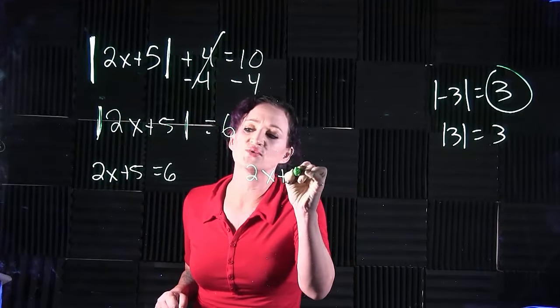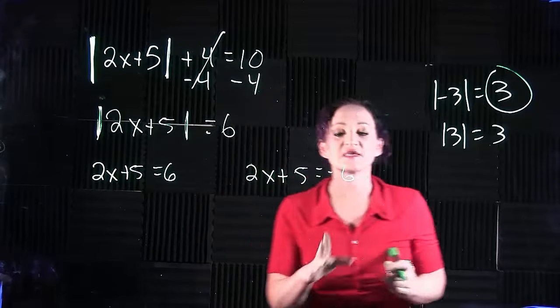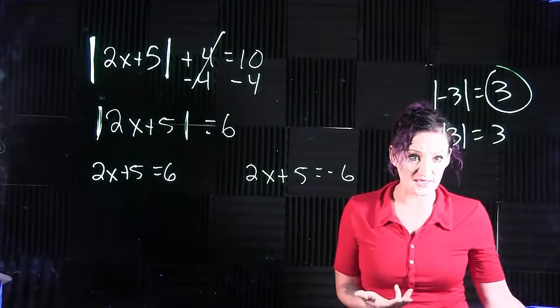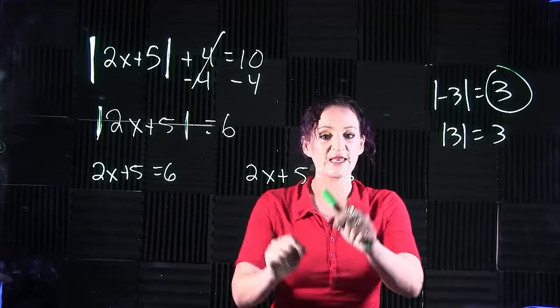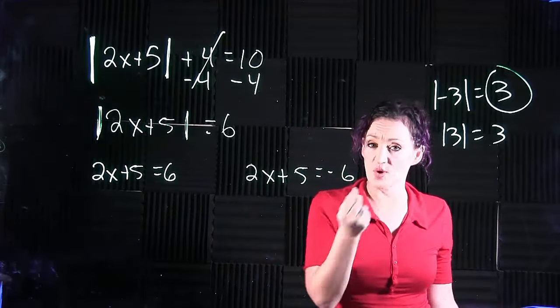We're going to take the same equation, 2x plus 5. Now we're going to set it equal to a negative 6. So your first equation is always going to stay normal. The second equation, just change the sign on what it's set equal to.